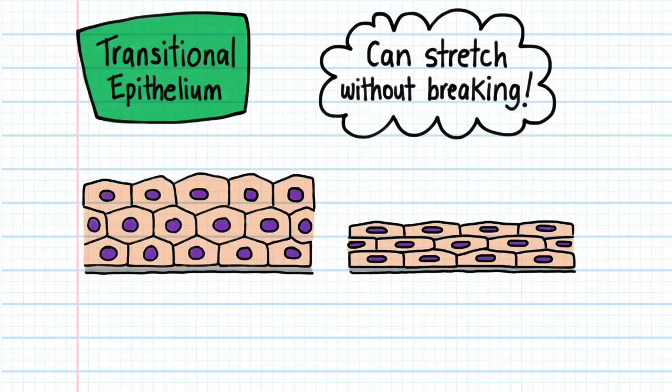Transitional epithelium is found in the bladder, because the bladder has to stretch as it fills with urine.